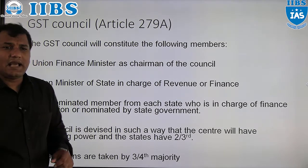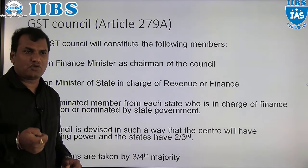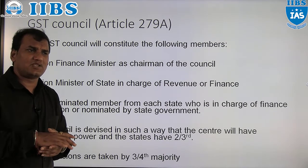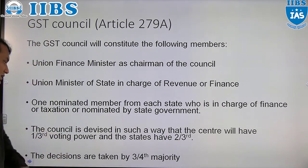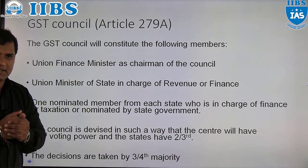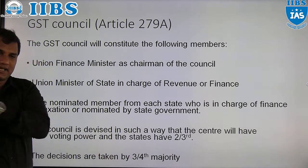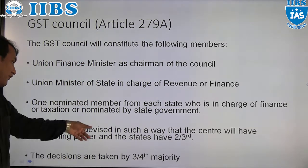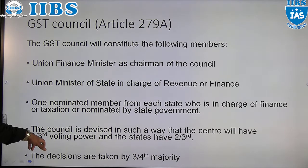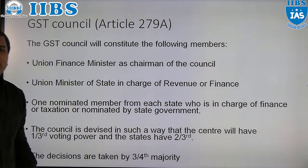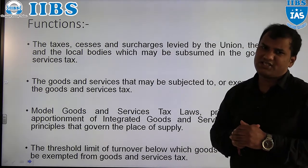Each and every decision in the GST Council is taken based upon voting power. Decisions require three-fourths majority. Under this three-fourths majority, the union government has a weightage of one-third, and state governments together have a weightage of two-thirds in the GST Council's decision making.